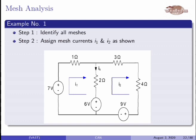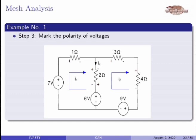After identifying the meshes, we assign mesh currents I1 and I2. Generally we assign mesh current direction in the clockwise direction, though you can also take the current in the anticlockwise direction. We always use this clockwise direction convention for currents to obtain similar results. After marking these currents, the next step is to mark the polarity of voltages. Depending upon the current direction in each mesh, we mark the polarity.